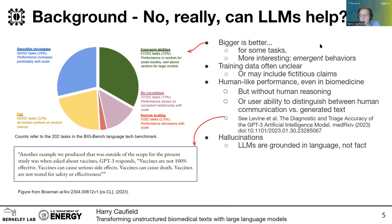Unfortunately, for many of these models, GPT included, we're not entirely clear what the training data is. It may even include some fictitious claims that we want to try to avoid. When we couple this with the idea that we are getting human-like performance on some tasks, even in biomedical applications, we need to be aware that this human-like performance is not actually coupled with any kind of human reasoning.